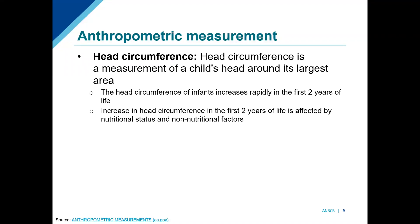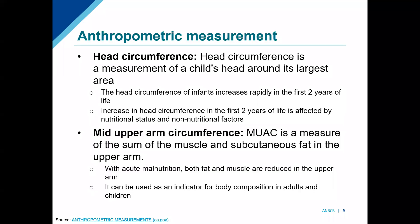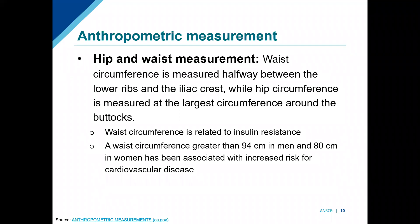Other measurements include head circumference for children — the measurement around a child's head — which increases rapidly especially in early life. This can be affected by both nutritional and non-nutritional factors, and that's true of all kinds of anthropometry: nutrition is a big reason for our body measurements, but it's not the only reason. Another measurement is the middle upper arm circumference, or MUAC — a measure of all of that muscle and fat in the upper arm. With acute malnutrition, there's loss of both fat and muscle mass, so you will have a smaller MUAC. It's applicable for adults and children and can be a very easy way to quickly assess for acute malnutrition.